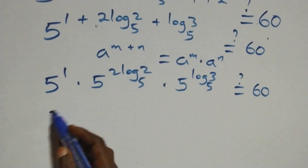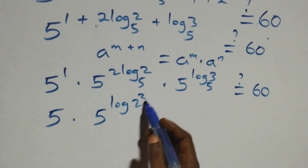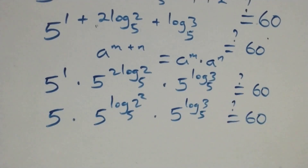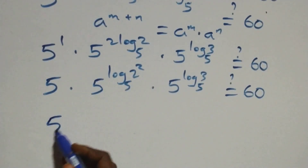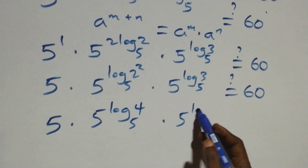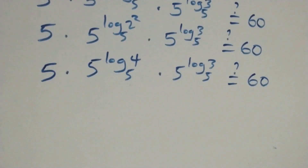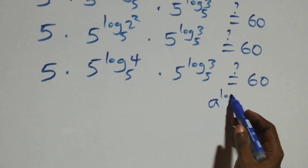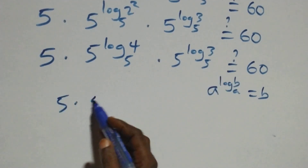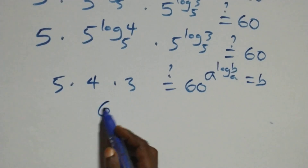This follows from the identity a raised to power log b to base a equals b. So 5 raised to power log₅4 is 4, and 5 raised to power log₅3 is 3. We have 5 times 4 times 3 equals 60. 5 times 4 is 20, and 20 times 3 is 60, which equals 60.